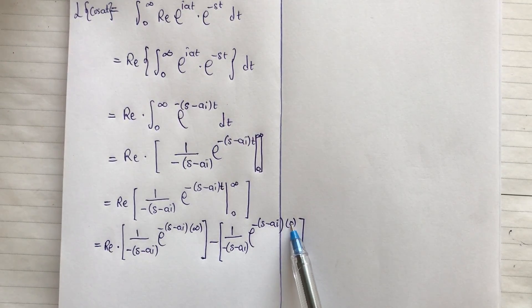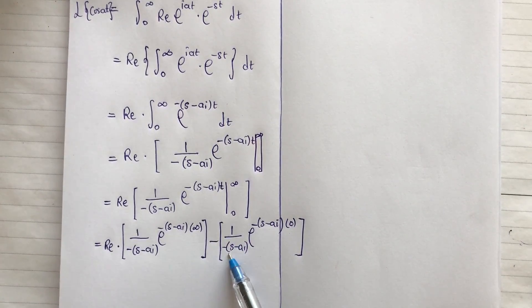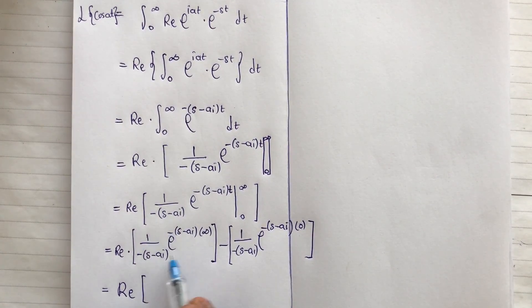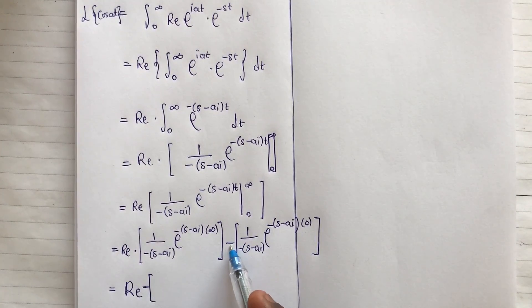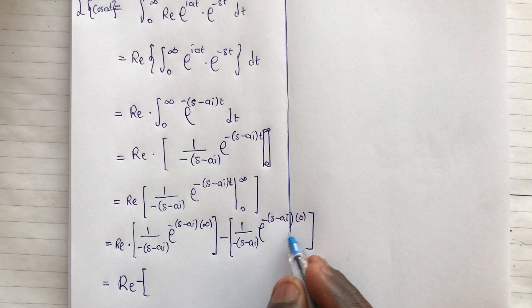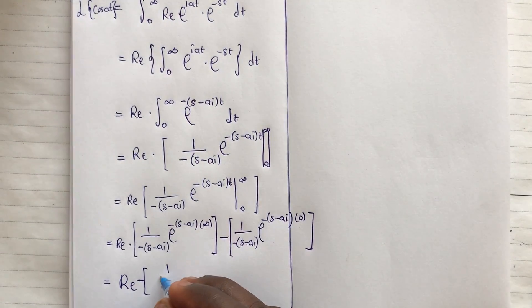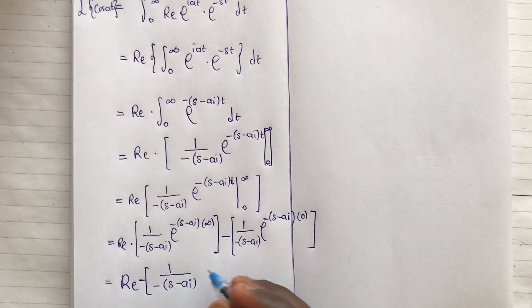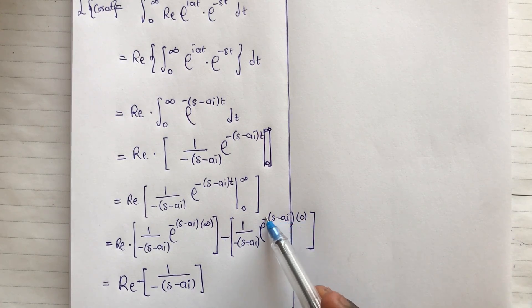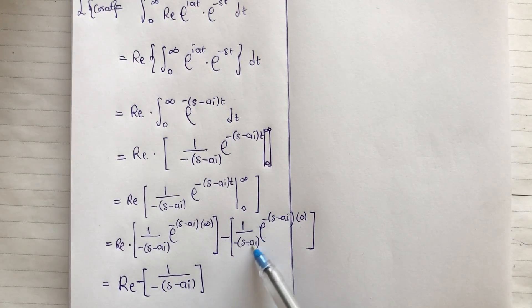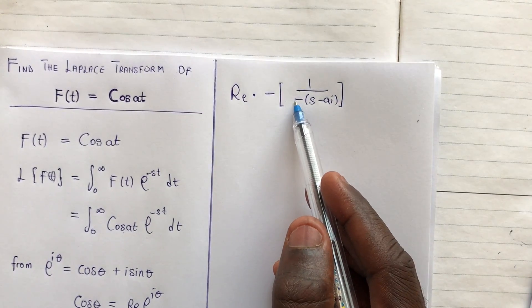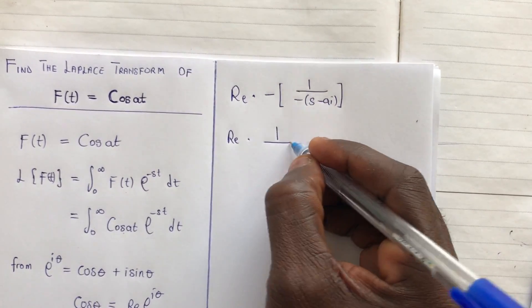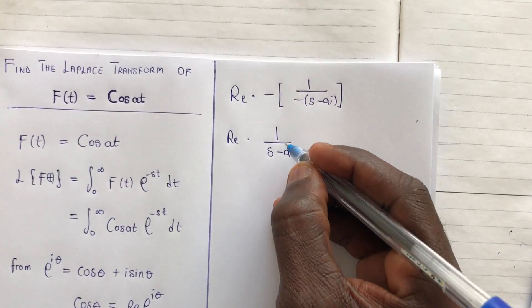At t = 0, e to the power zero is 1, so the lower limit term becomes 1 times 1 over (minus s minus a·i). The upper limit evaluated at infinity goes to zero. So we have Re multiplying negative of 1 over (minus s minus a·i), and the two negatives cancel, giving Re times 1 over (s minus a·i).